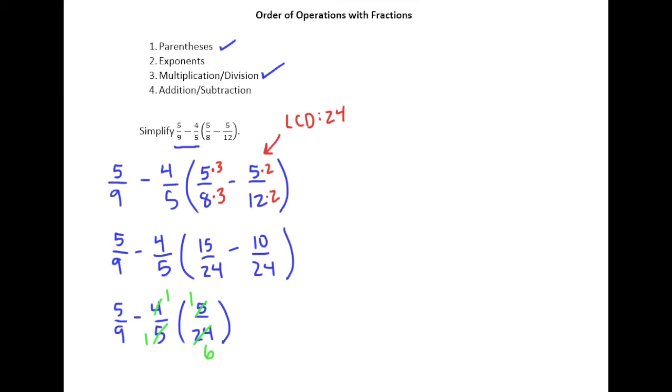So this ends up cleaning up to 5/9 minus 1/6. And then we just need to find a least common denominator for 9 and 6.